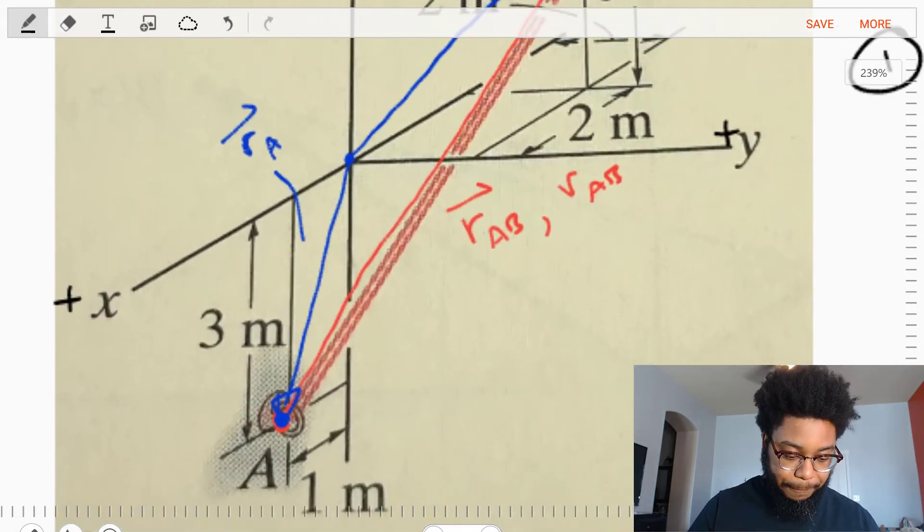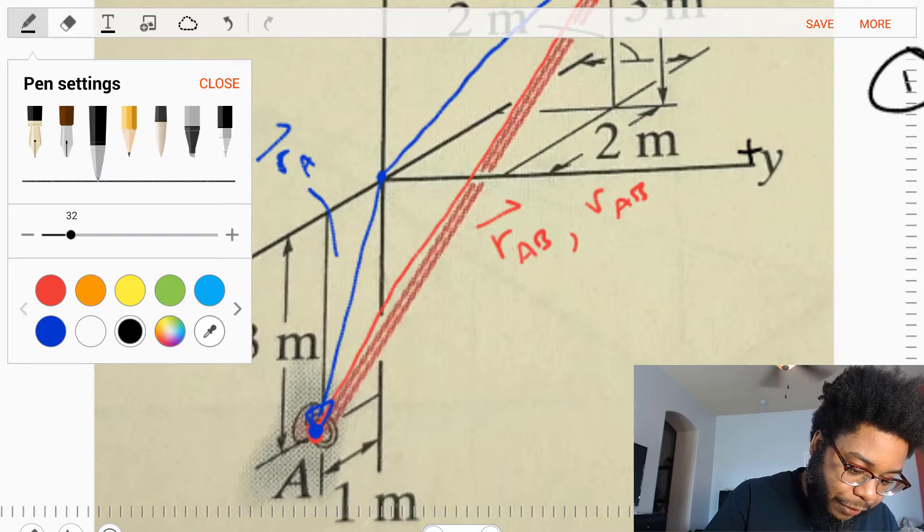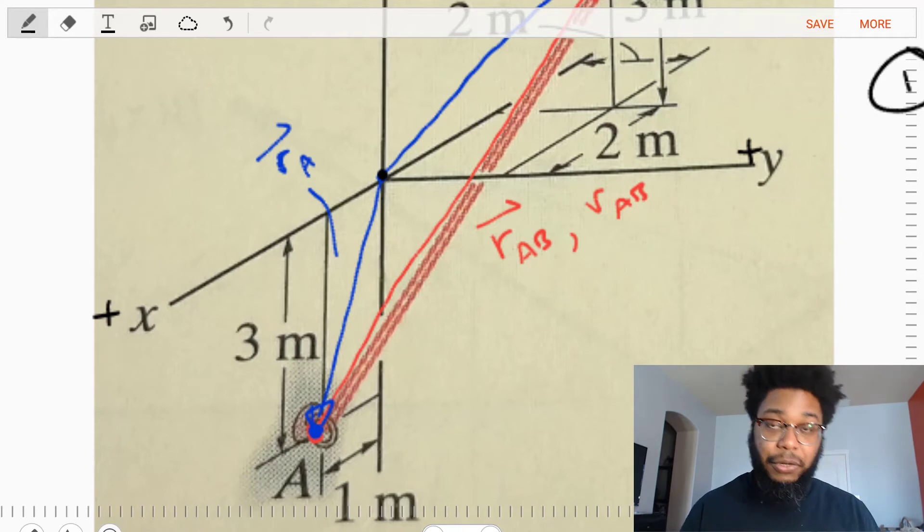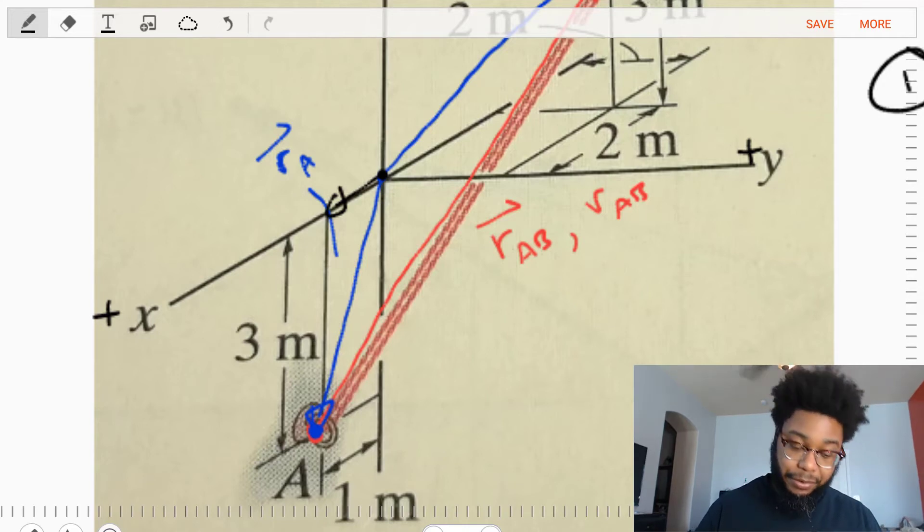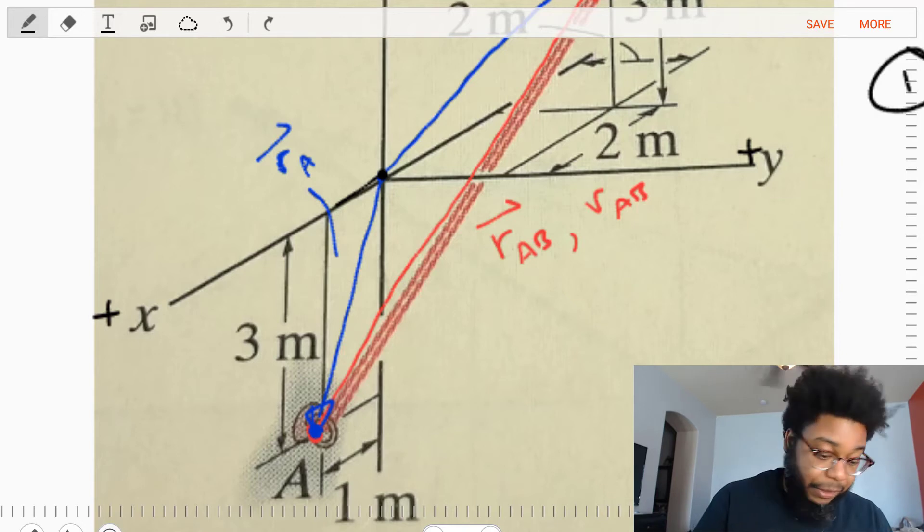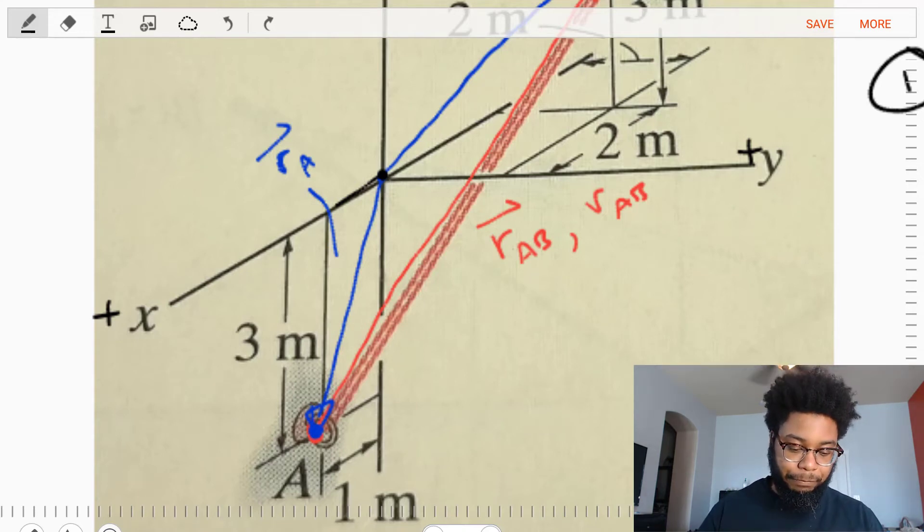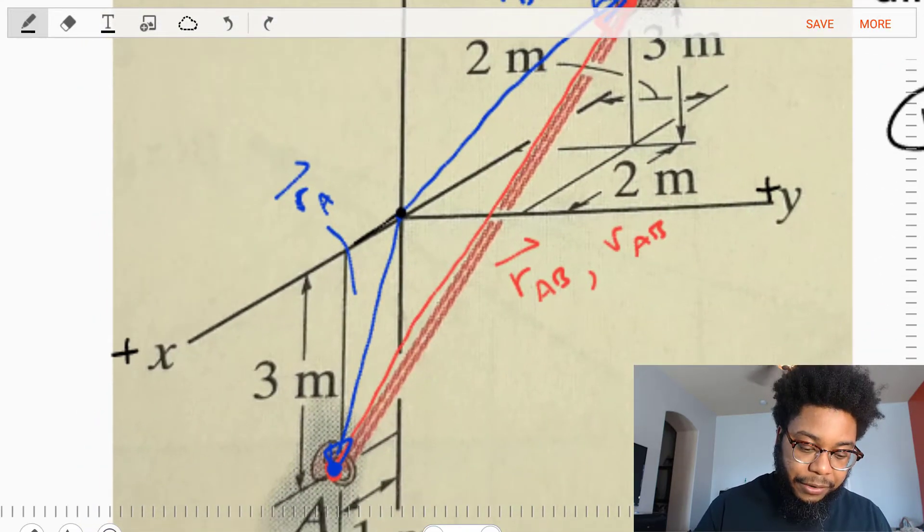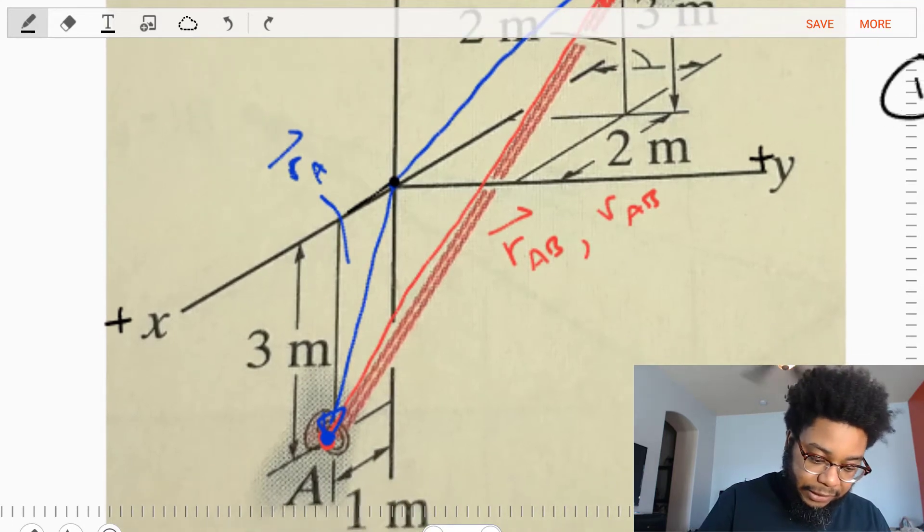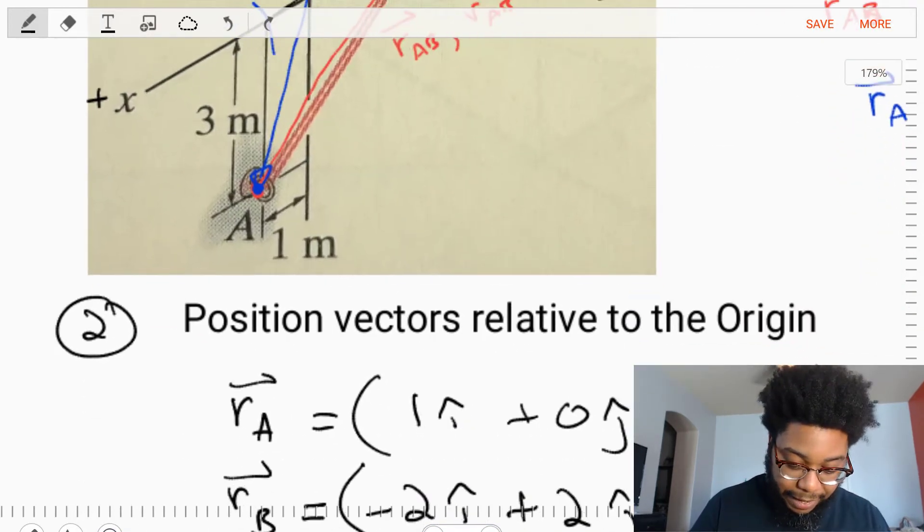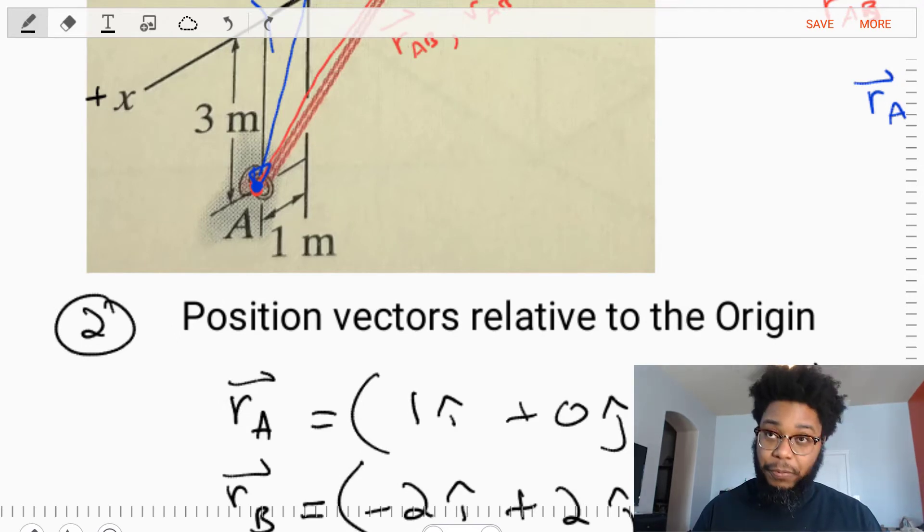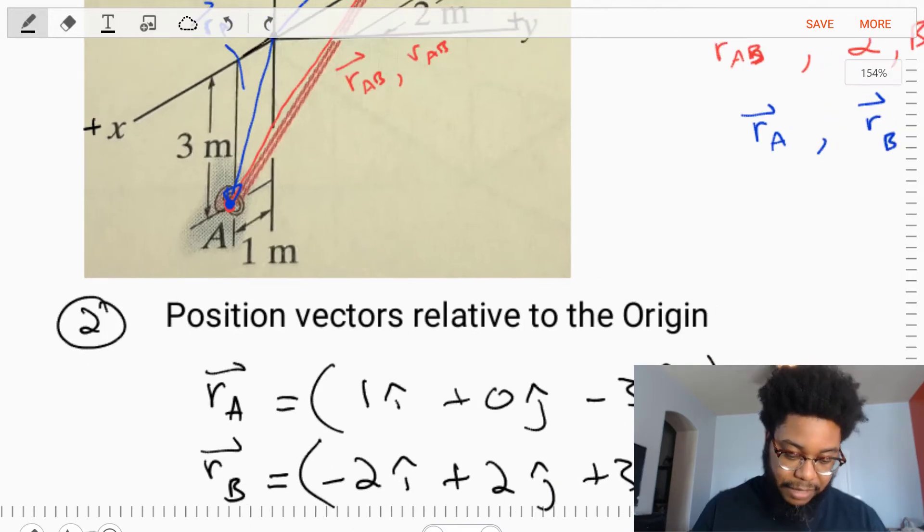Let's start with RA. We want to find its Cartesian vector starting from the origin. On the x axis, it moves in the positive x direction by one meter. On the y axis, it's zero, flat on the x to z plane. On the z axis, RA moves downwards in a negative direction by three meters. So we have one meter i, plus zero meters j, minus three meters k. That gives us our first position vector.